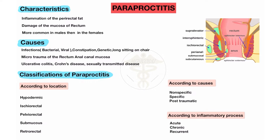The causes of Paraproctitis: the main causes are bacterial infection — primarily bacterial, some viral. Main bacteria include E. coli, Streptococcus, Staphylococcus, and Enterococcus bacteria. These are the main bacteria which cause Paraproctitis in the rectal lesion.